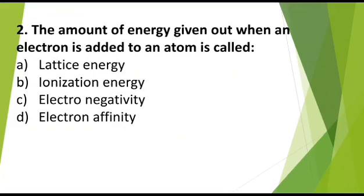MCQ 2. The amount of energy given out when an electron is added to an atom is called: a) Lattice energy, b) Ionization energy, c) Electronegativity, d) Electron affinity. Correct answer is electron affinity.